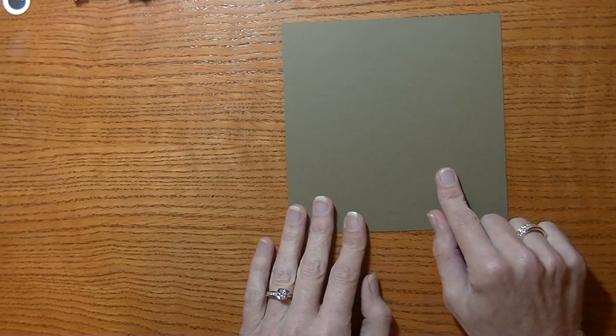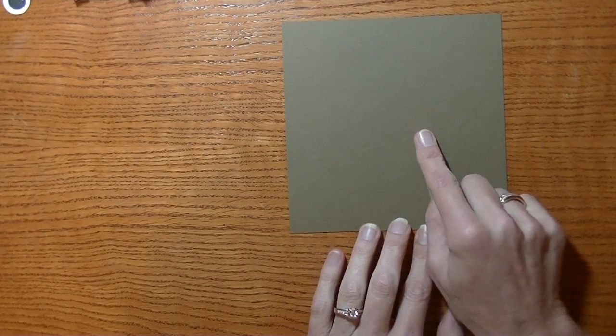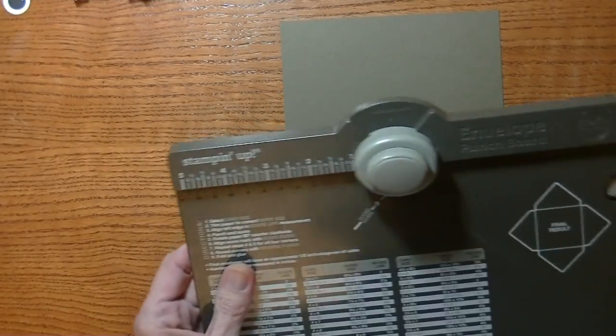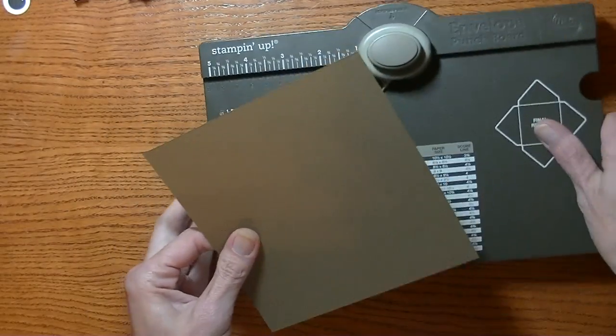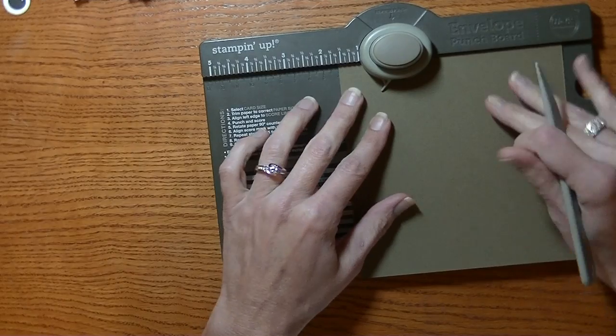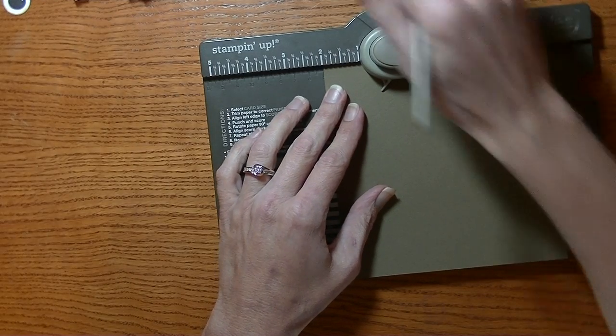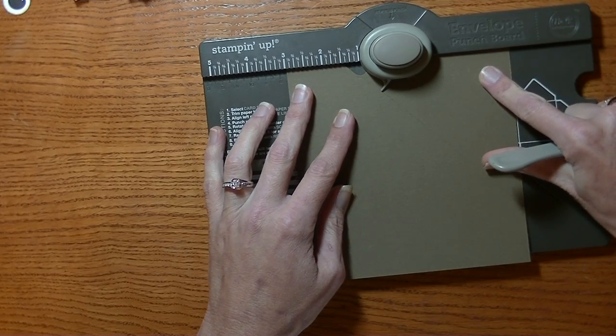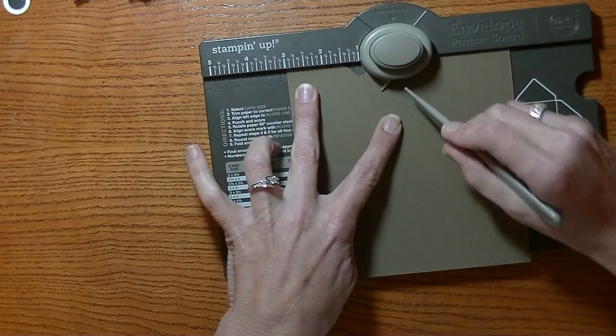Alright, so to get started, you're going to need a piece of card stock. I'm using all Stampin' Up color, this one here is soft suede, six by six. You're going to bring in your envelope punch board. You're going to line up one edge at two inches and then punch and score. Scoot it over to three inches and do the same. Punch and score.